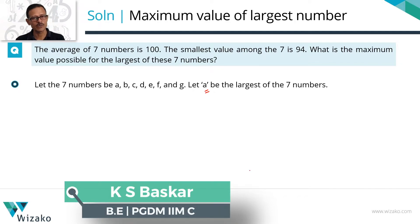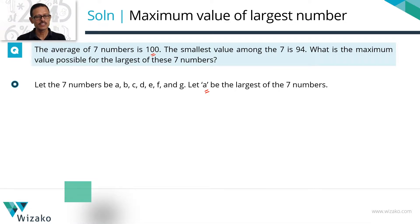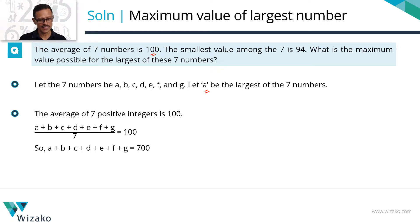Our objective is to find out the maximum possible value for A. What's the first piece of data that we have? We have that the average of these 7 numbers is 100, which means A plus B plus C plus D plus E plus F plus G divided by 7 is equal to 100. So cross multiply this. The sum of these 7 numbers is equal to 700. Let's call this as equation 1.